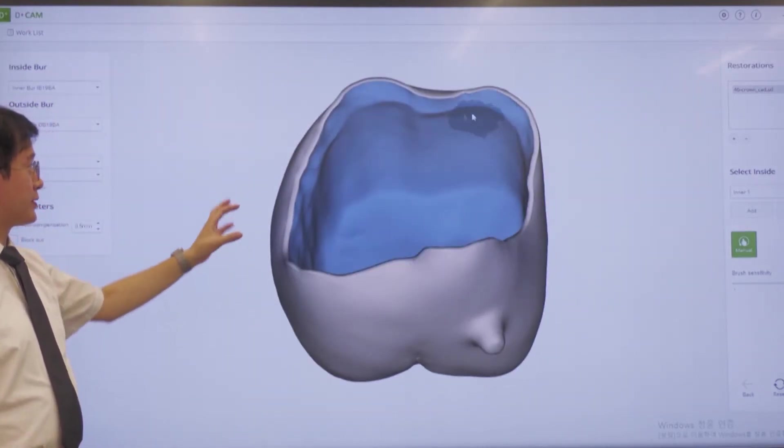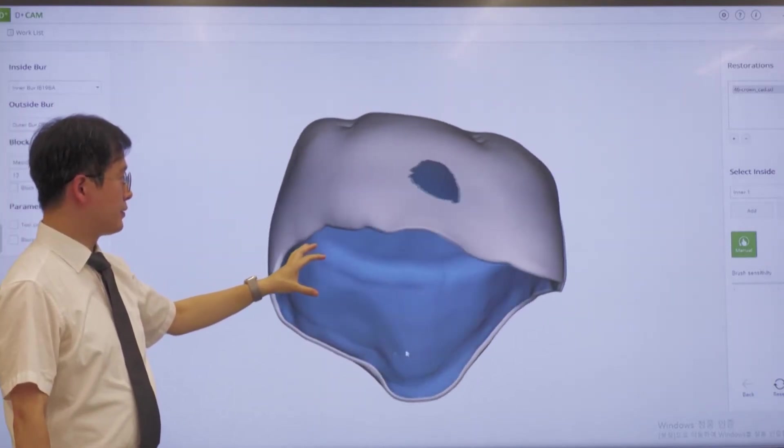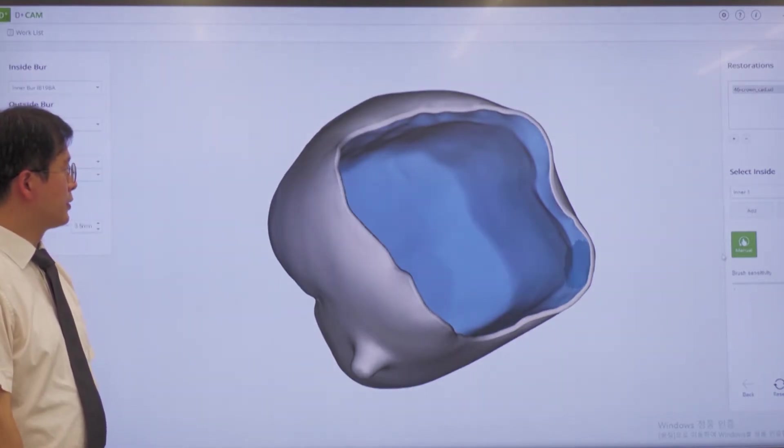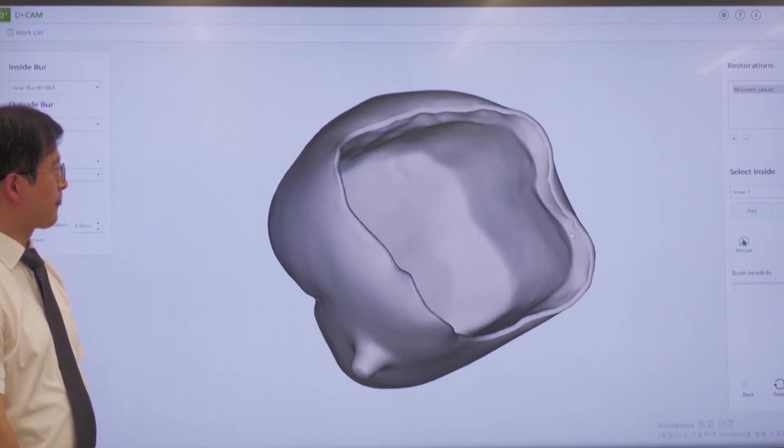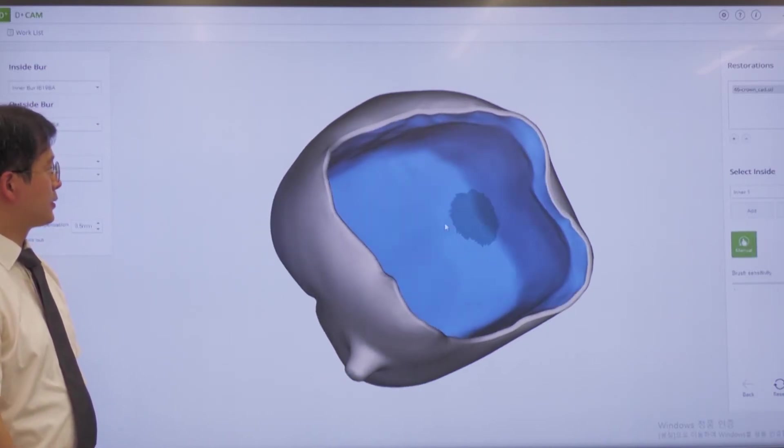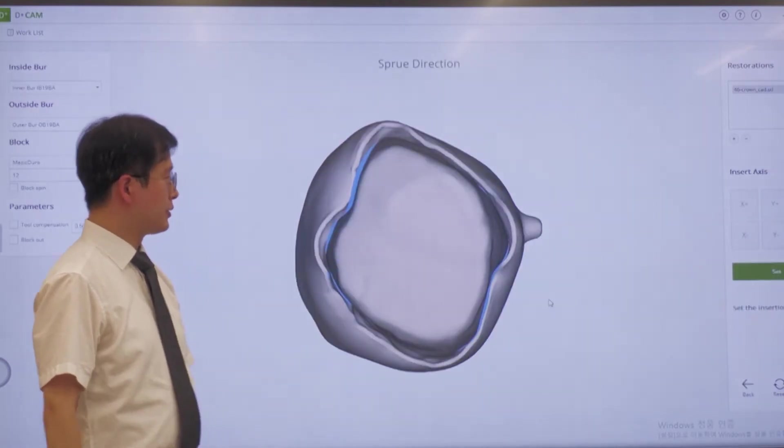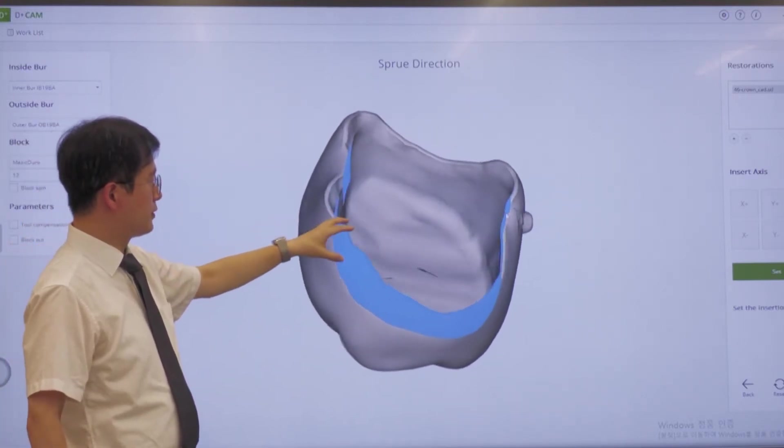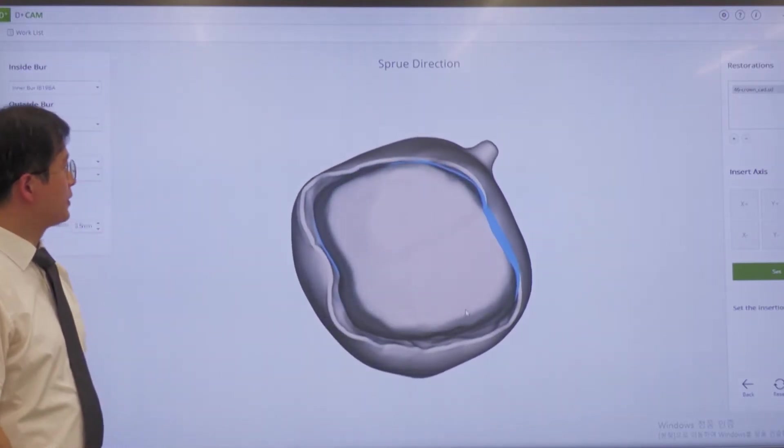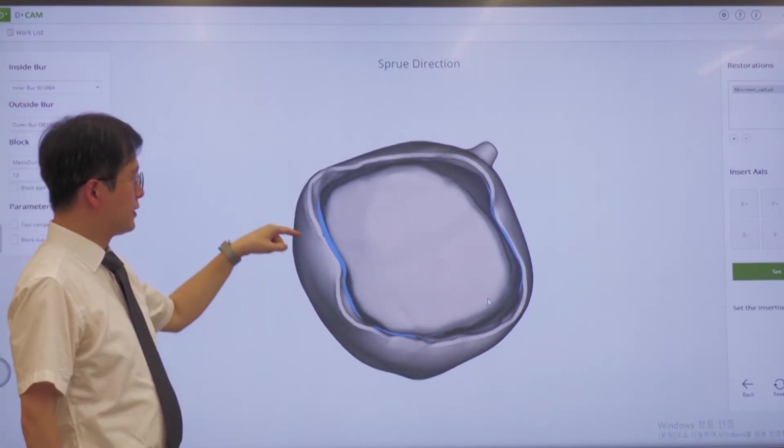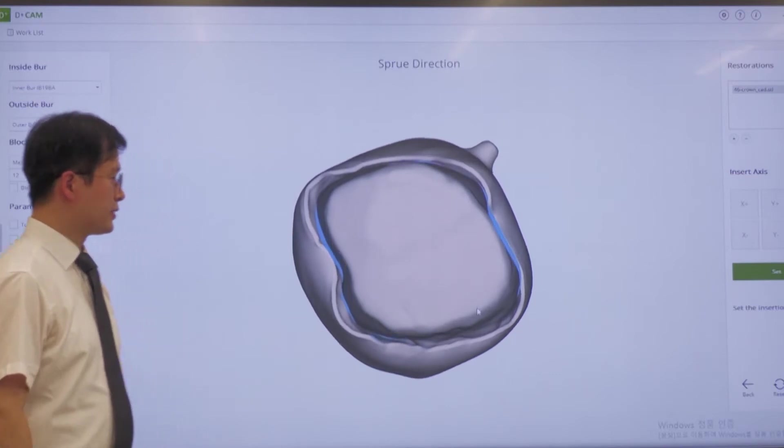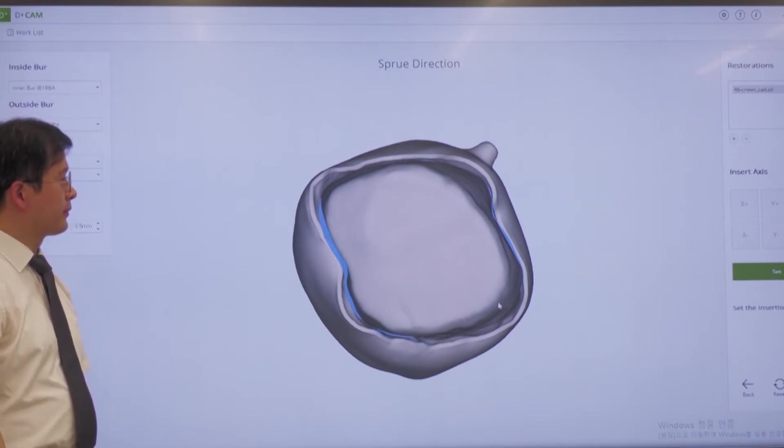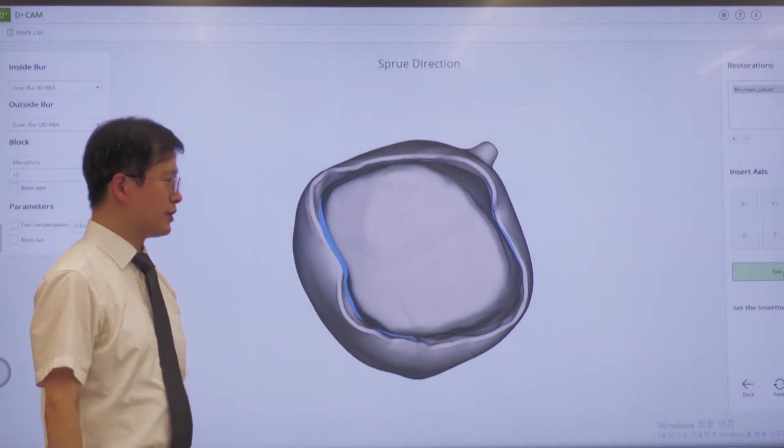After we select the cavity side, then we double-click this side. The computer will understand this is internal side, and we set the path of insertion. We have to select the best angulation for a milling process. We set this direction as path of insertion.